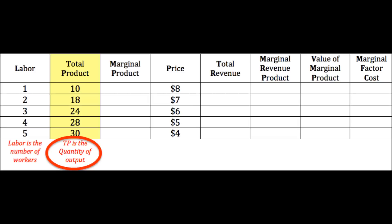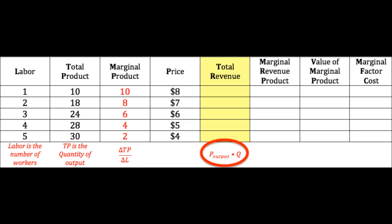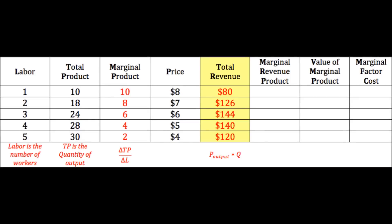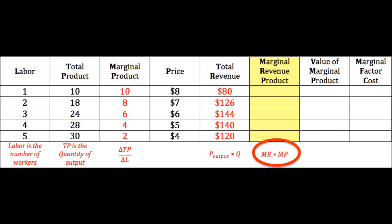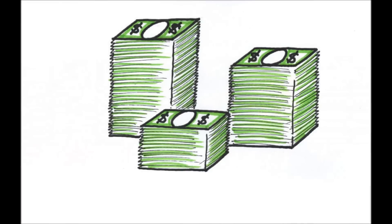We take the change in total product with each worker — change in total product over the change in labor. Given monopoly prices, to sell more output the monopolist decreases price. We can determine total revenue by taking the price of the output times the quantity of the output. Once we have the total revenue figures, we can determine the marginal revenue product — the revenue added with each worker — by looking at the change in total revenue as each worker is hired. Notice that the change in revenue can actually be negative; that is, hiring more workers past a certain point can actually cause total revenue to fall.